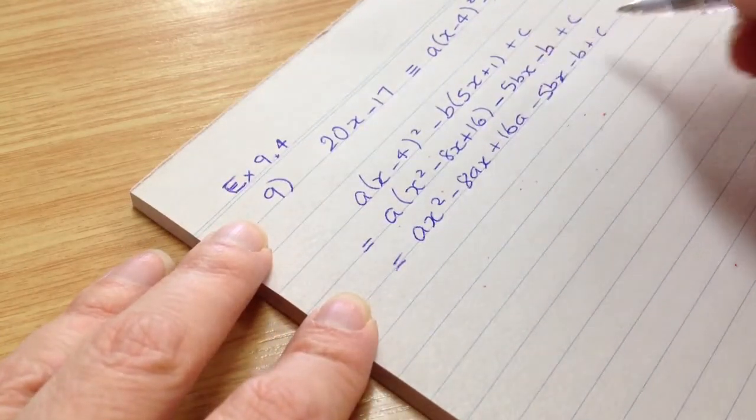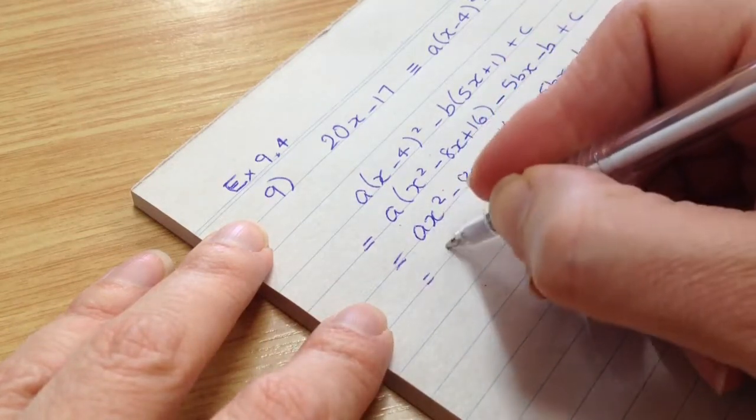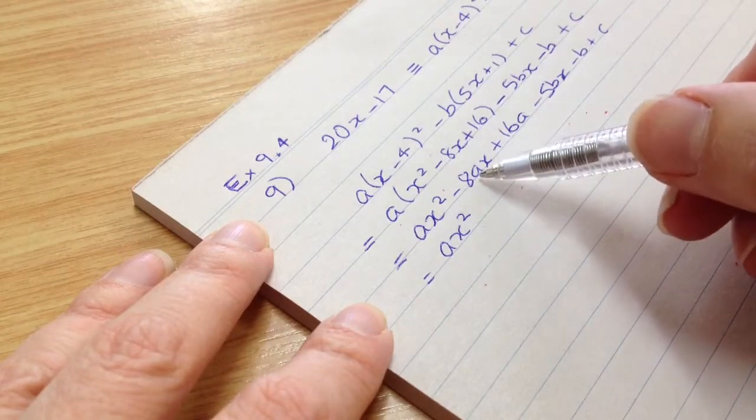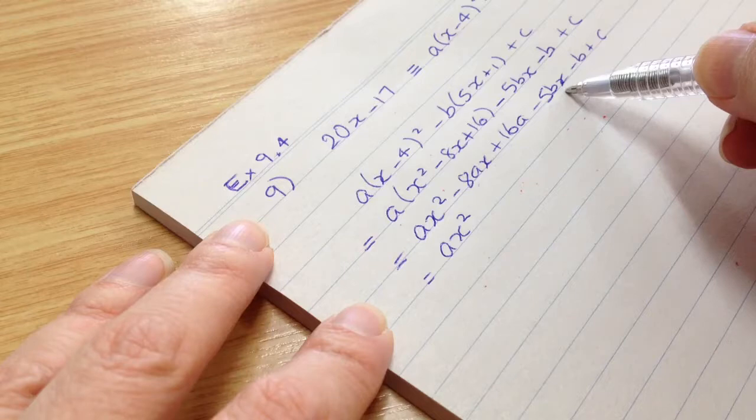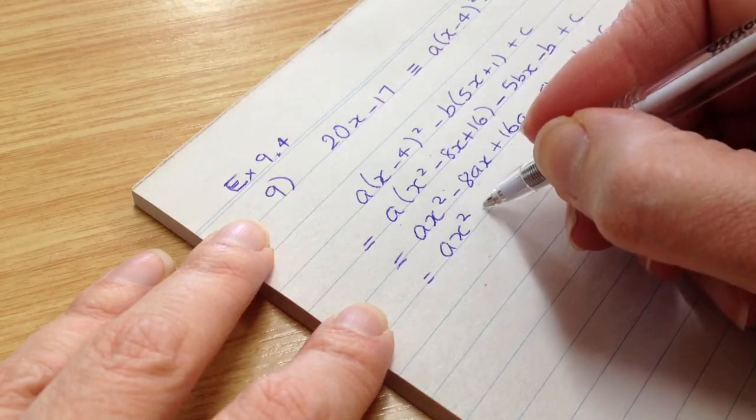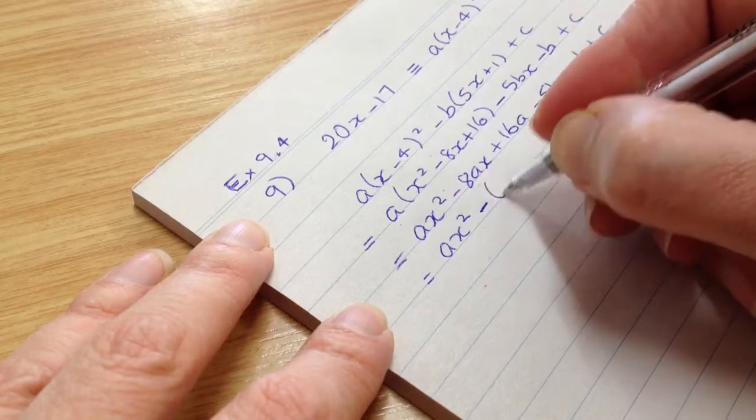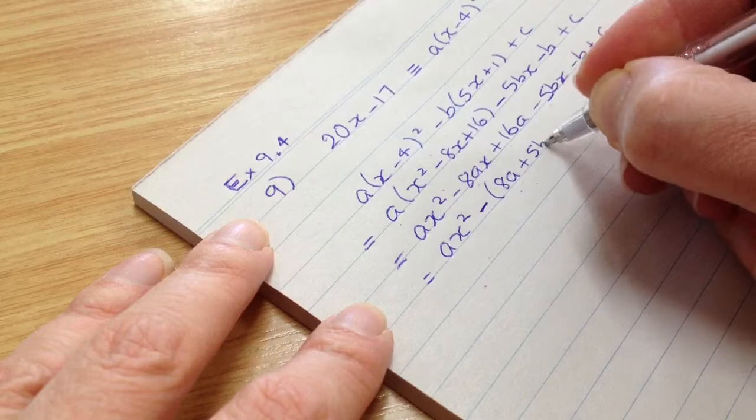Okay, so now we're going to group everything according to their terms. So we've got ax squared. There's only one x squared term. Okay, the x terms are minus 8ax and minus 5bx. So we're going to put them together. All right, put a minus in front of the brackets, if you like, and just write 8a plus 5b.